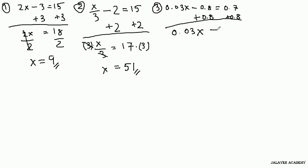This falls out to 0, and what's left on the right side is 1.5. Since we're multiplying x by 0.03, in order to get x alone, we divide by 0.03 on both sides. Those cancel out, and we're left with x equals 50.